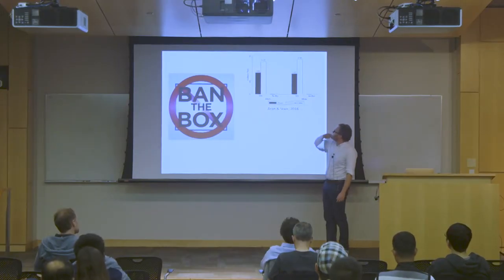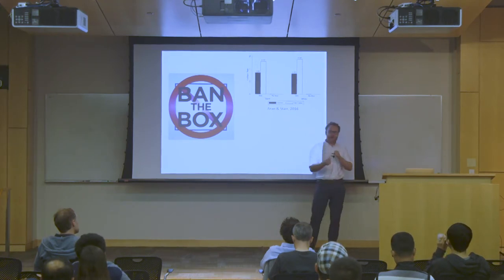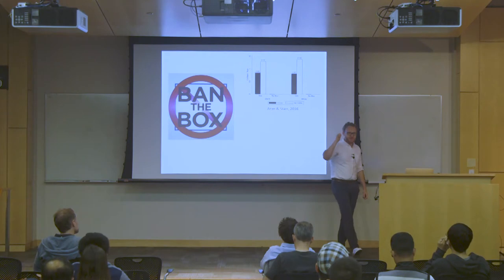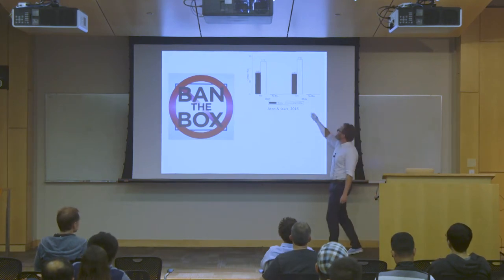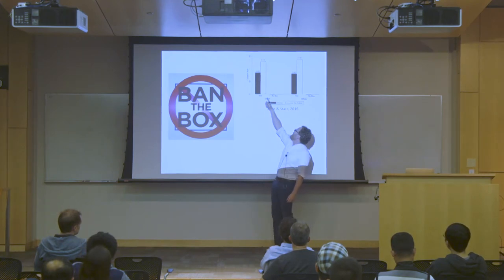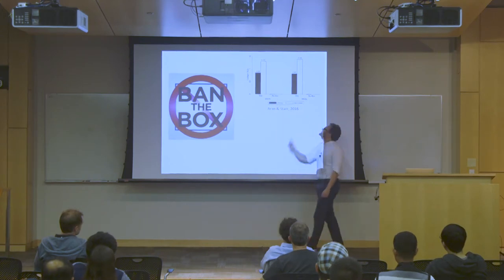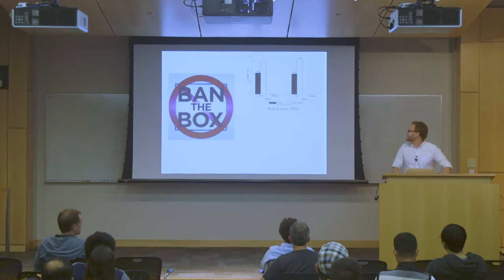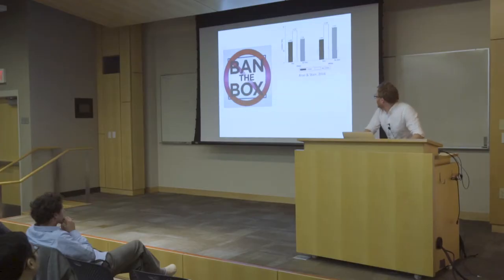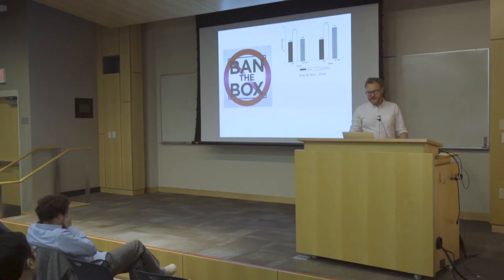So, this is exactly what happened. So, Agan and Starr published a paper in which they measured callback rates before and after the box was banned in, I believe, New Jersey. So, callback rates for former criminals that were black and former criminals that were white were low and about the same. For non-criminals that were black and non-criminals that were white, they're also about the same. The white callback rates are slightly higher. But once the box was taken away, the callback rates for all blacks fell nearly to the rate that they were for former criminal blacks. And the callback rates for all whites rose nearly all the way to where they were for people who were not criminals. So, this is exactly what happens if you take away individuating information and don't realize that stereotypes are a statistical process and therefore they're going to have a much bigger effect if you have less information about each individual.